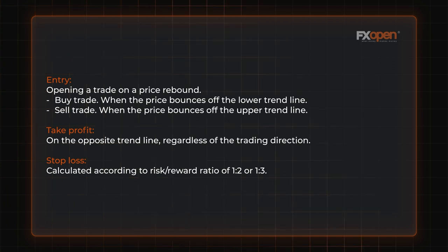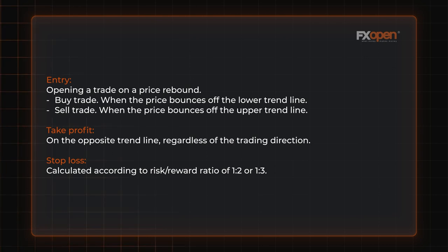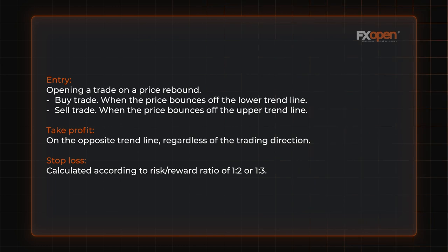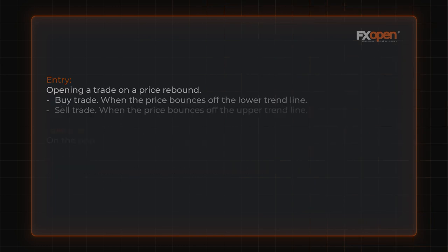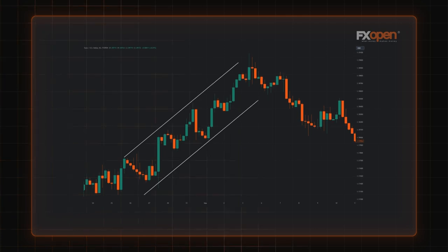You could place a take profit level on the opposite trend line regardless of the trade direction. A stop loss order can be calculated in accordance with the risk-reward ratio of 1 to 2 or 1 to 3. The chart shows a potential sell trade.